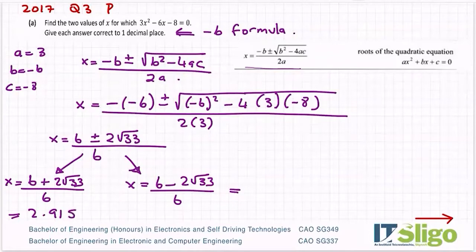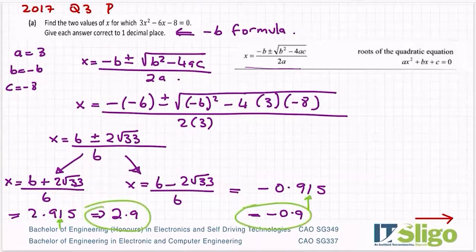Hit the fraction button first and put in the top line six plus two root 33 all over six. And I'm going to STD him there now. And I got 2.9148. And if I go back, you can use your back arrow to bring you back and just change the plus to a minus there. And I've got minus 0.915. So to one decimal place, you look at the second one. That's a one, so it's not going to change my answer. So he's 2.9 and he's minus 0.9. So there's my two answers for x using the minus b formula.